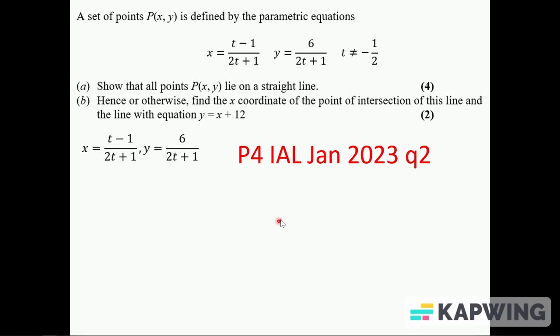Right, P4 International A Level Jan 2023, some parametric equations here. We've got a set of points defined by these parametric equations. We'll show all points lie on a straight line and then find the x-coordinate of the point of intersection of this line with the line with equation y equals x plus 12.